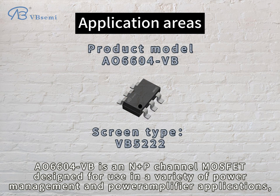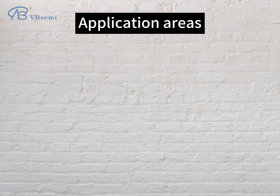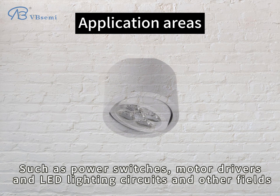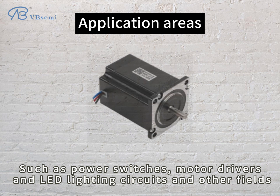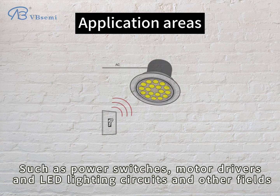The A06604VB is an N plus P channel MOSFET designed for use in a variety of power management and power amplifier applications, especially where both positive and negative voltage control is required, such as power switches, motor drivers, LED lighting circuits, and other fields.